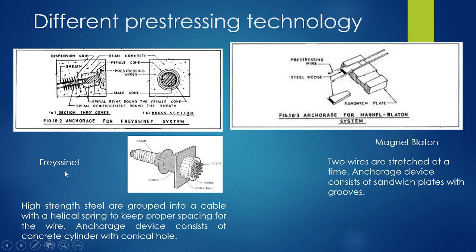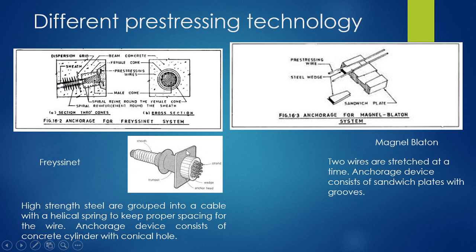Coming to the Freyssinet system — these are high-strength steel wires grouped into a cable. Many wires are grouped together, and between them there are helical springs to keep spaces between the wires. Then it is anchored using an anchor head. The anchorage device consists of a concrete cylinder. The strands continue to a bearing plate. There is a sheath, the wire, and a conical cylinder — a concrete cylinder with a conical hole — which is the anchorage device.